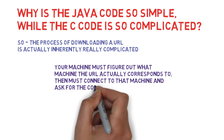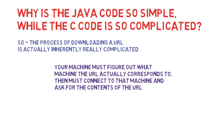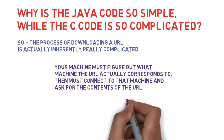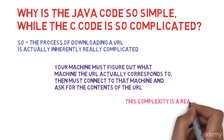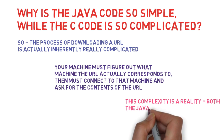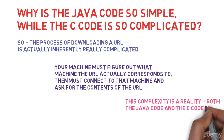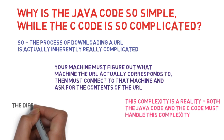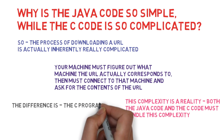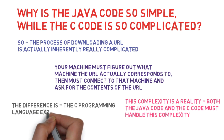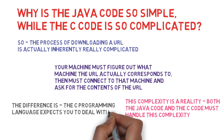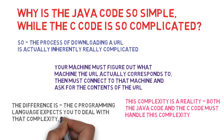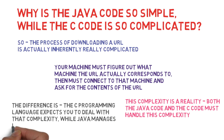It's almost deceptive that the Java code is so simple — this complexity is a reality. Both Java and C need to face this complexity; they just do so differently. C expects you as a programmer to deal with all the nitty-gritty of connecting to a remote machine and downloading the contents, with full control over configuration parameters. Java says: I'll manage it for you — just tell me what you want done and I'll take care of all the nitty-gritty behind the scenes.